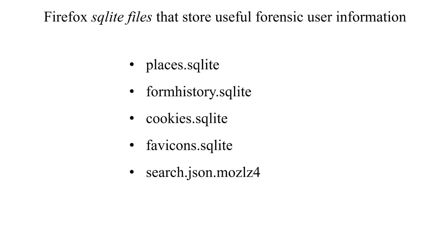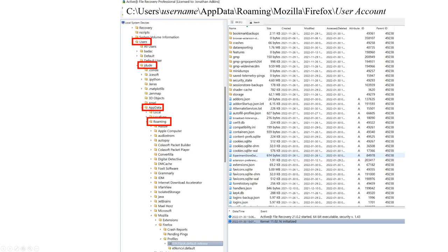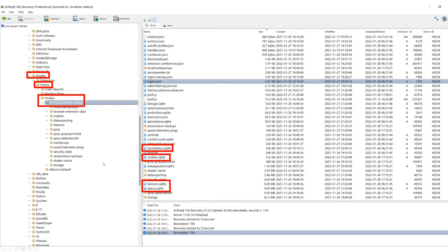Here is a list of some of the SQLite files that store useful internet artifacts associated with the Firefox browser. These include places.sqlite, formhistory.sqlite, cookies.sqlite, favicons.sqlite, and search.json.mozlz4. The Firefox user internet files are located on the C drive at Users, user profile name, AppData, Roaming, Mozilla Firefox, Profiles, and then the specific user profile. In this directory, there are four SQLite files of interest: form history, cookies, favicons, and places.